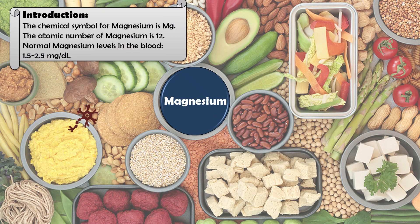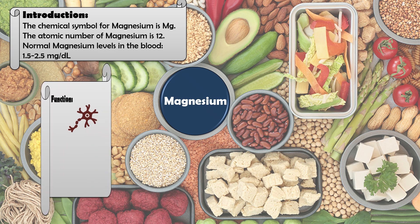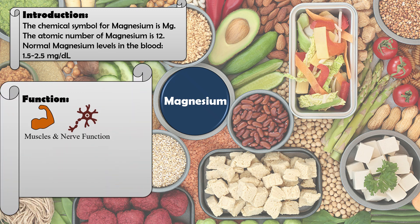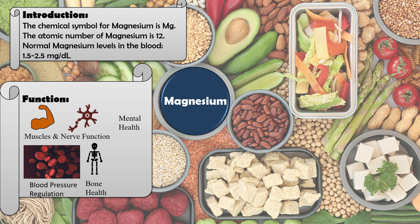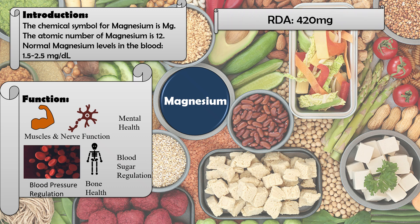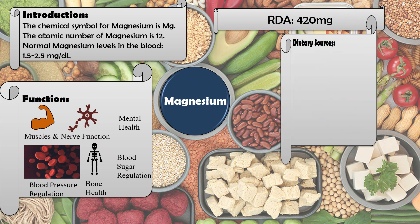The symbol for magnesium is Mg and the atomic number is 12. The normal level of magnesium in the blood is 1.5 to 2.5 mg/dL. Magnesium is required for muscle and nerve function, mental health development, blood pressure regulation, bone health, and blood sugar level regulation.